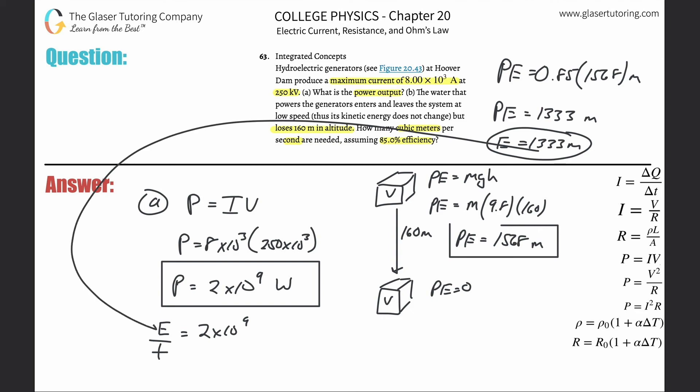So what I'm going to do is the substitution: I'm going to do the 1333m divided by time equals 2×10⁹. Now we're getting close here.